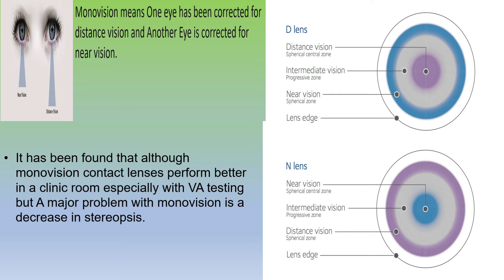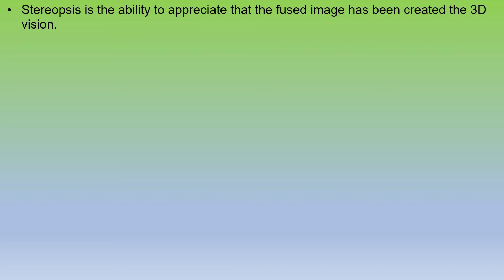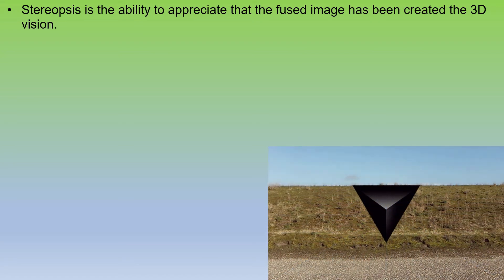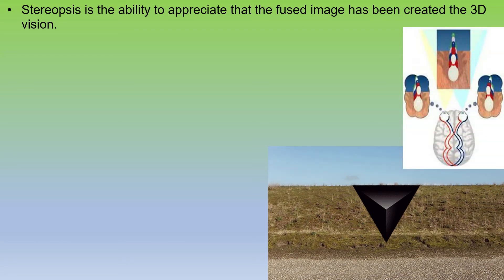So let's understand stereopsis. Stereopsis is the ability to appreciate that the fused image has created 3D vision — meaning the image depth, height, and width should be optimal. It is obtained only when the visual information received from both eyes individually should be similar.